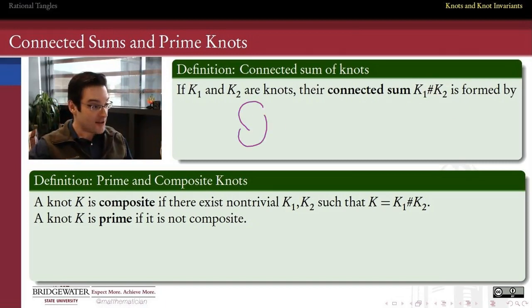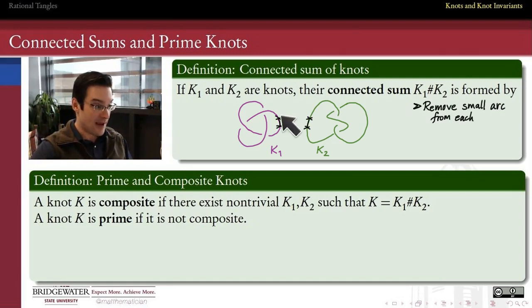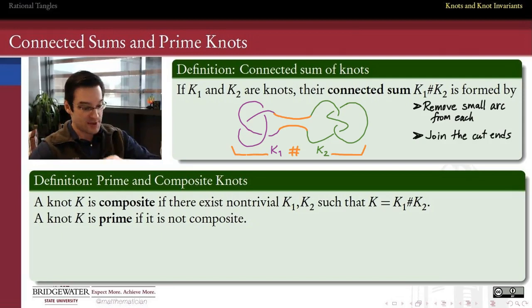And we'll form the connected sum by taking the two knots, so maybe these are my two knots, k1 and k2, and then we'll just snip out a little arc from each one of these knots. So maybe I'll cut out a little piece of the knot k1 right here, cut out a little piece of k2 right there, and then just connect up those cut ends with these uncrossed, just standard uncrossed, unknotted, unlooped arcs. And when I join those cut ends together, I get the connected sum of these two knots.